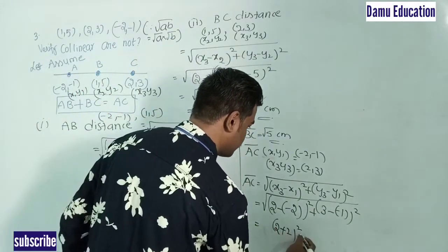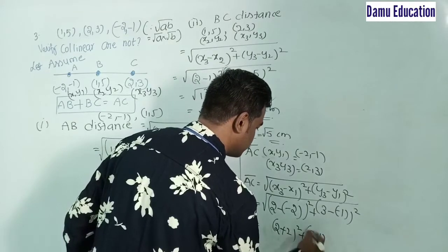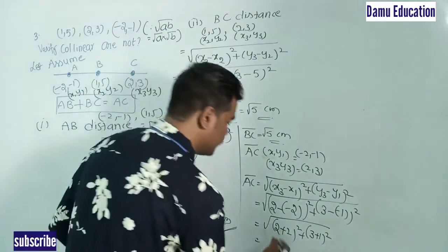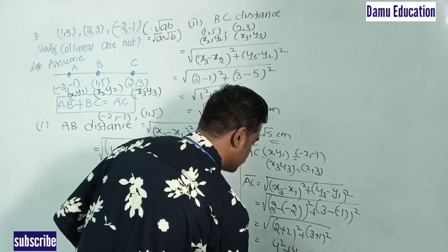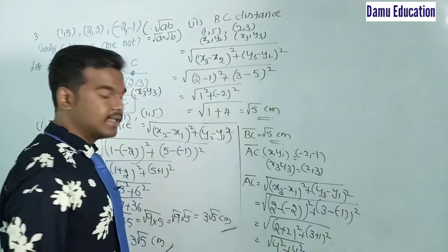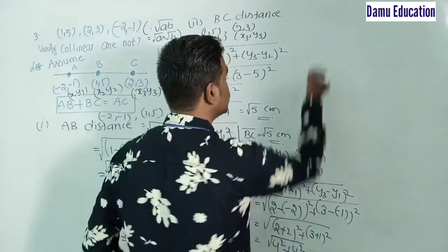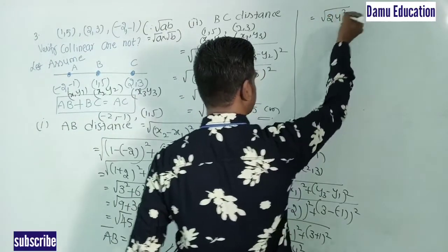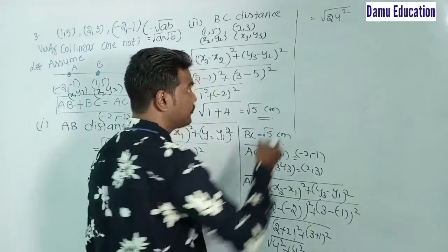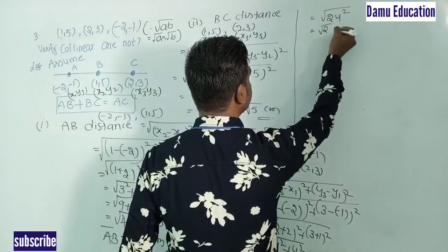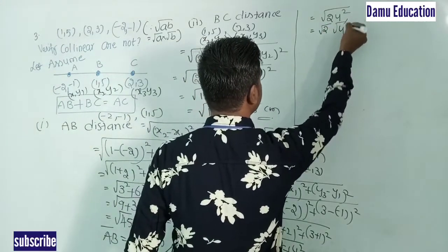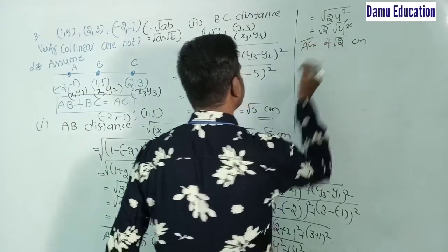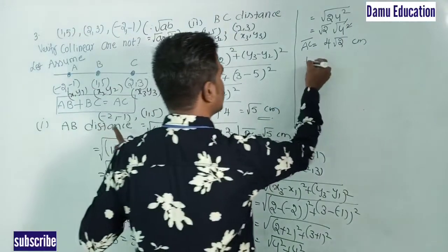So AC = √(16 + 16) = √(2 × 16) = √2 × √16 = 4√2 centimeters. Using the property √(ab) = √a × √b, the square root of 16 gives 4, so the distance AC = 4√2 centimeters.